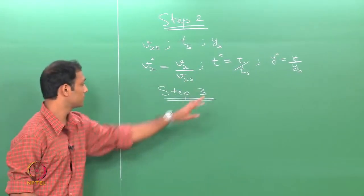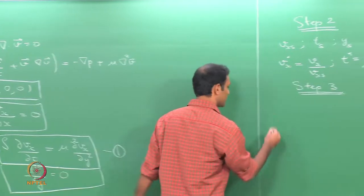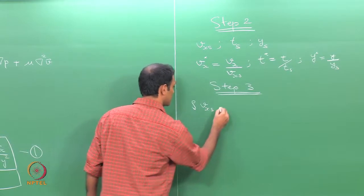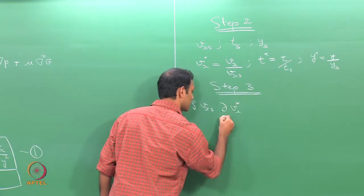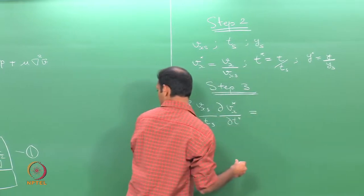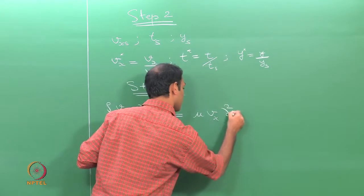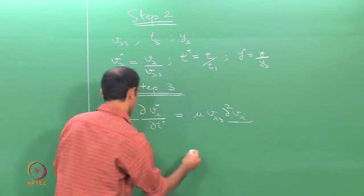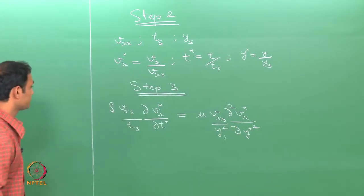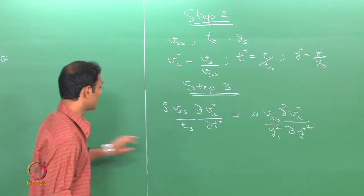In step 3 we substitute these variables into the governing equations. We look directly at equation 1 since that is the one helping us find how vx changes in time. Writing it out: ρ times (vxs/ts) ∂vx*/∂t* = μ times (vxs/ys²) ∂²vx*/∂y*². These are the governing equations once non-dimensionalized.